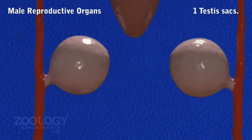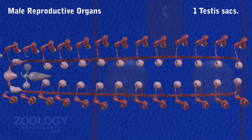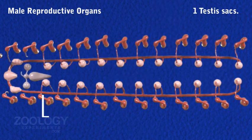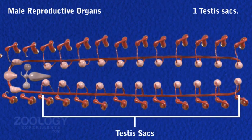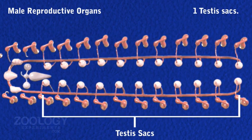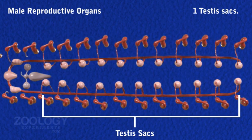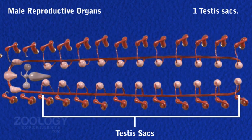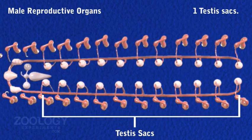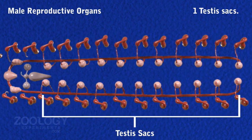Testes: There are 11 pairs of small spherical testes situated in the 12th to 20th segments. They are located ventrally, one on either side of the ventral nerve cord.